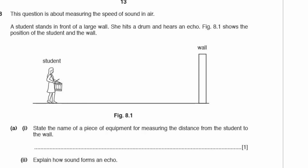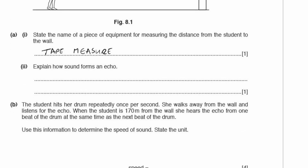Question 8: this question is about measuring the speed of sound in air. A student stands in front of a large wall, beats a drum, and hears an echo. Part A1: state the name of the piece of equipment for measuring the distance from the student to the wall — that's going to be a tape measure. Part A2: explain how sound forms an echo. Sound from the drum is reflected from the wall back towards the student.